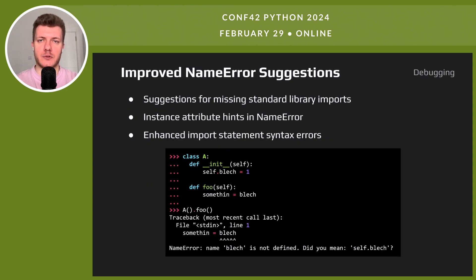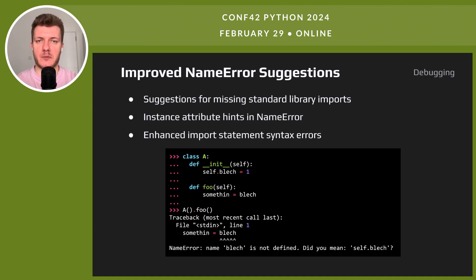Python 3.12 makes error messages more helpful. NameErrors now offer suggestions for fixes — it can hint at missing standard library imports and also suggest correct instance attributes. For example, it might recommend using self.attribute. These changes make debugging much easier.